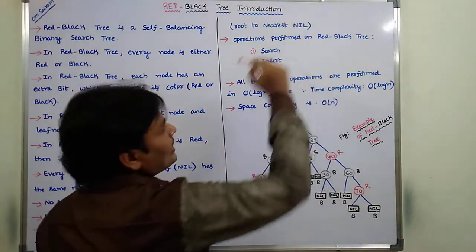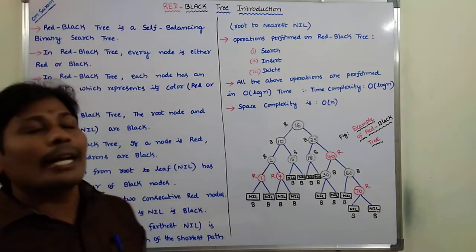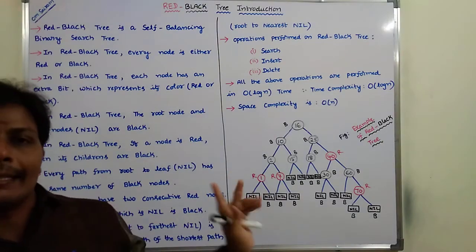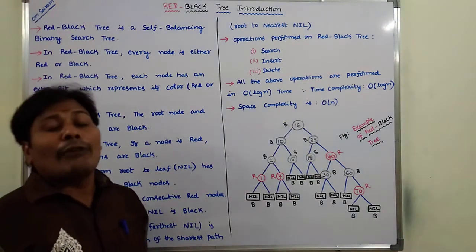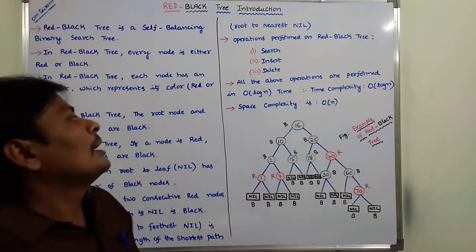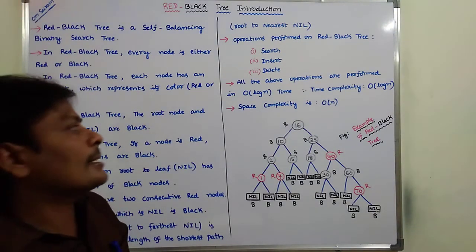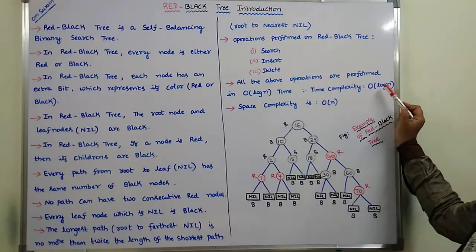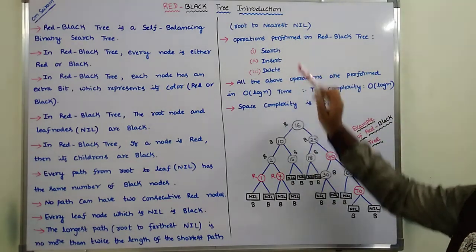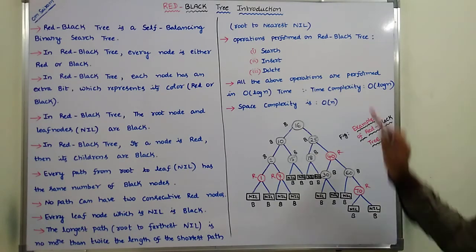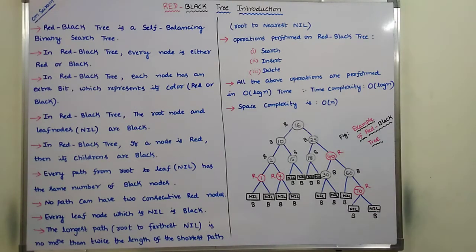There are 3 operations that can be performed on the red-black tree: search, insert, and delete. The time complexity to perform these 3 operations on the red-black tree is O(log n).